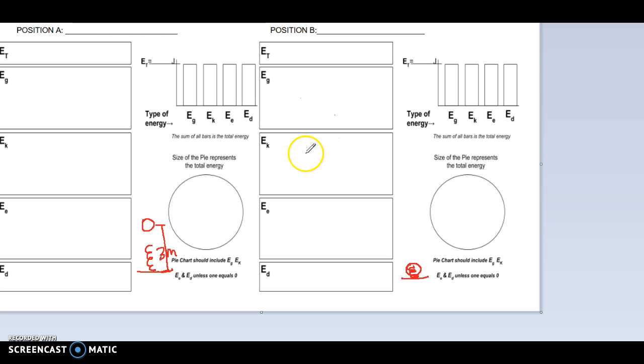So for position A, we're going to go through and we're going to ask ourselves the questions. So is it above the ground? Yes, so it has EG. Is it moving? No, because it says it's dropped. So it's not thrown, it's dropped, which means it starts from rest.